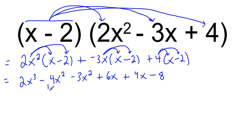Then I have to clean up these like terms here, and that leaves me with 2x cubed minus, so 4x squared minus 3x squared is 7x squared. And then that's 6x plus 4x, that's 10x, minus 8. And there it is. There's my multiplying through by a binomial into a trinomial.